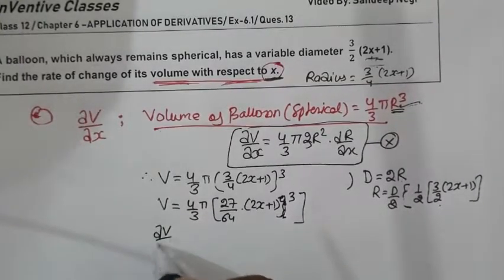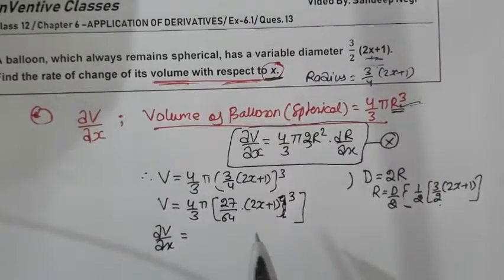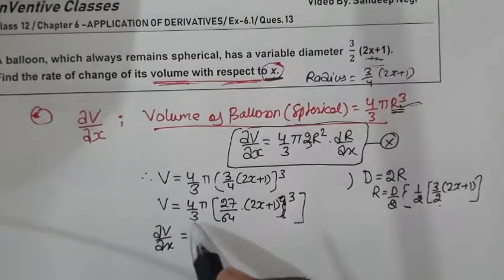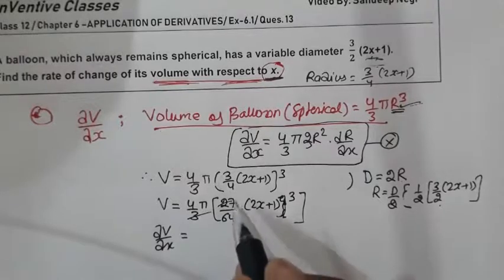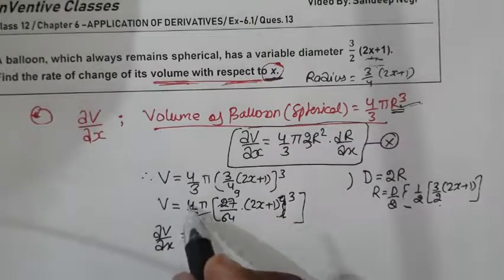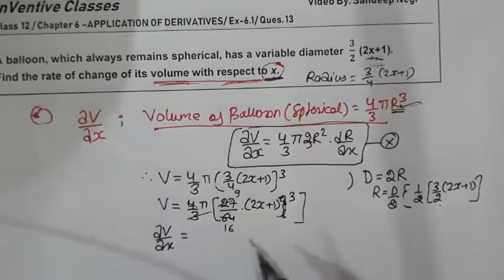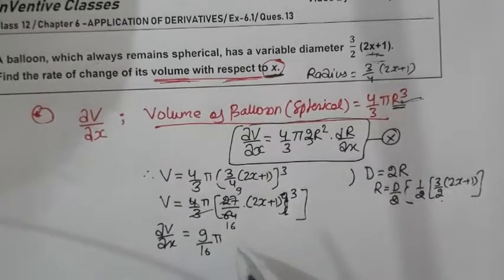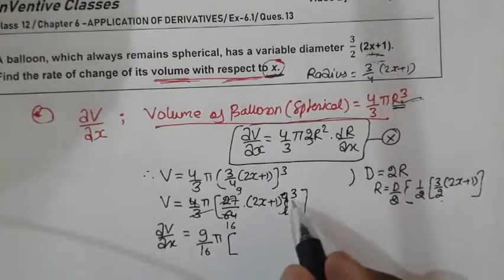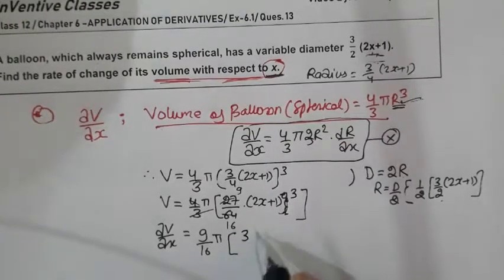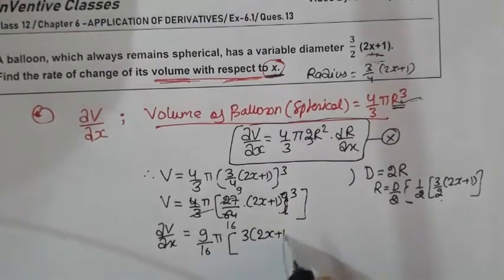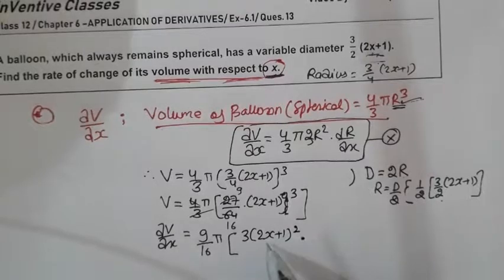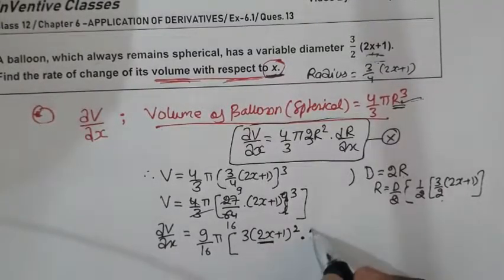If we cut these values, so this is nothing but 9, this is 16. So 9/16 pi will be there, and 2x+1 cube: 3(2x+1) square and 2x plus 2.